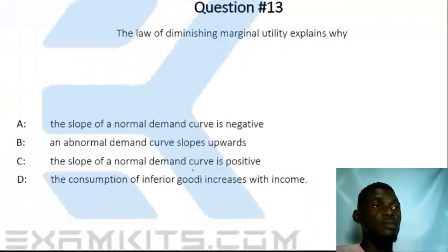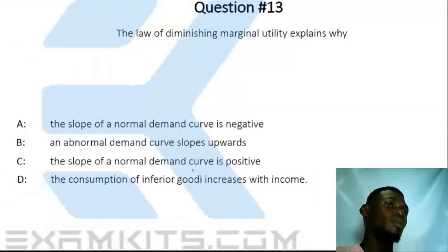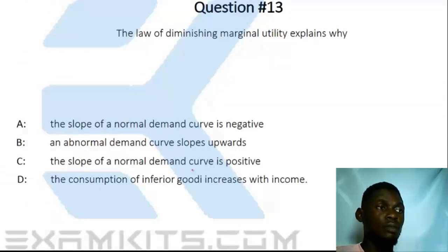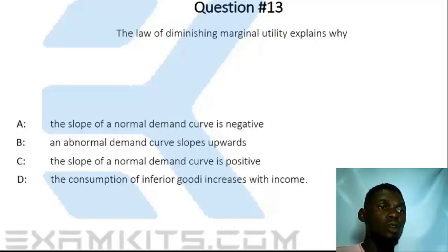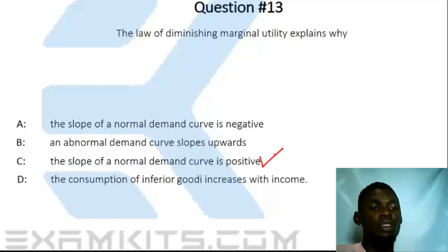Question 13. The law of diminishing marginal utility explains why the slope of a normal demand curve is positive. So option C is the correct answer.